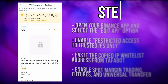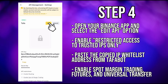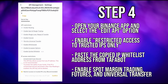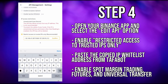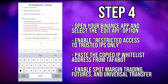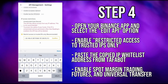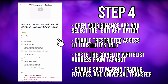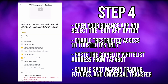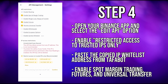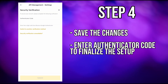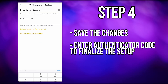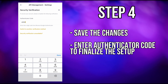Now open your Binance app and select the edit API option. Enable restricted access to trusted IPs only and paste the copied IP whitelist address from Tafabot. Confirm your selection. In your Binance account settings, enable spot margin trading, futures, and universal transfer. Save the changes and enter the authenticator code to finalize the setup.